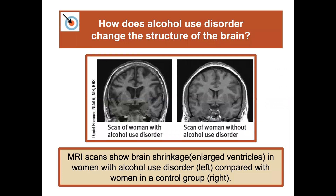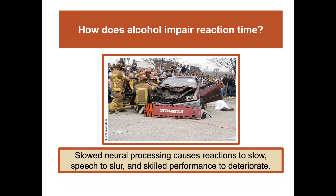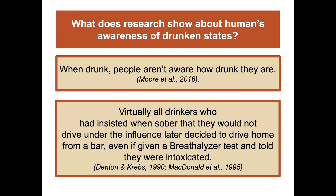MRI scans show brain shrinkage and large ventricles in women with alcohol use disorder compared to a control group. Slowed neural processing causes reactions to slow, speech to slur, and skilled performance to deteriorate. Research has shown that when drunk, people aren't aware of how drunk they are — virtually all drinkers who insisted sober that they wouldn't drive under the influence later decided to drive home from a bar, even after a breathalyzer test showed they were intoxicated.